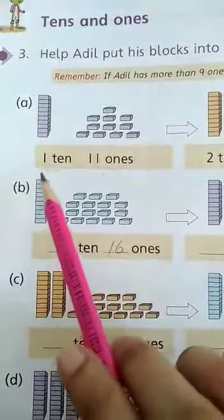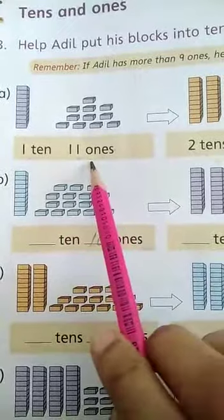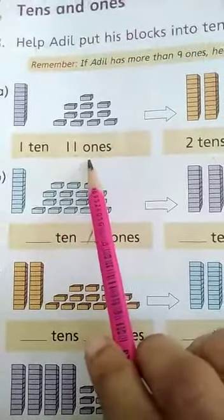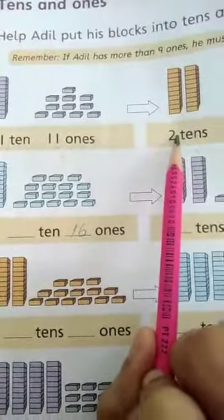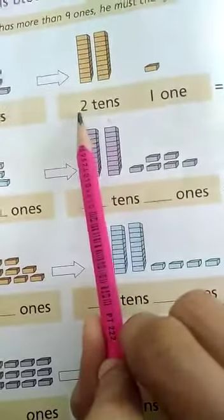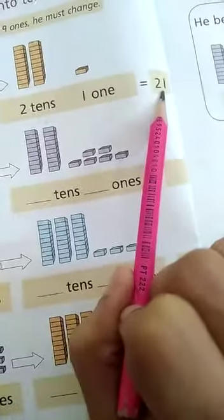On question number A, Adil has 1 ten and 11 ones. So he takes 1 ten and puts them in the tens column. Now Adil has 2 tens and 1 one, which is equal to 21.